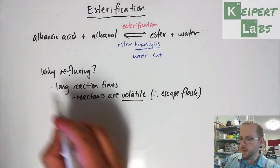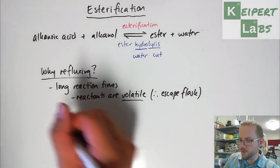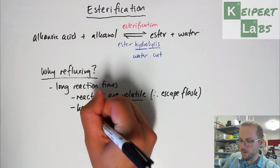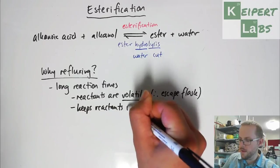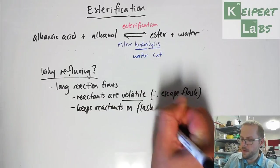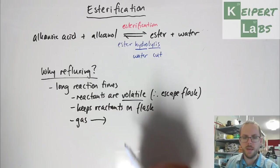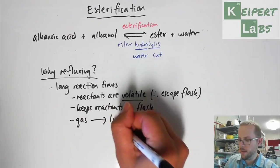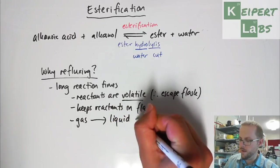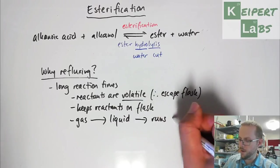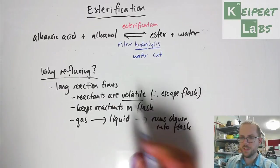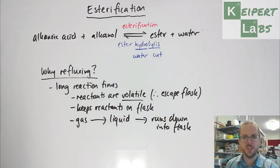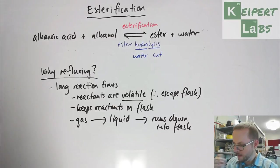So we use refluxing because it keeps reactants in the flask. The way that it does that is that it turns any vapours, any kind of gas back to liquid, and then runs down into flask. It's the same principle as to why we use a condenser in distillation, except instead of running down into a different flask, it's running back into the same flask.